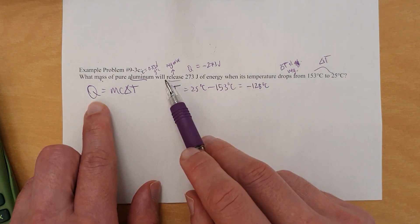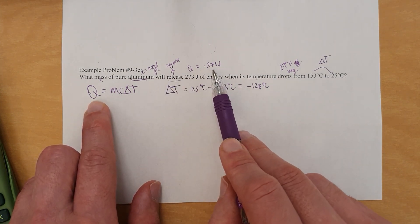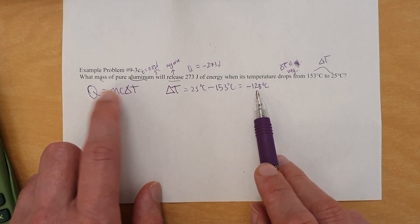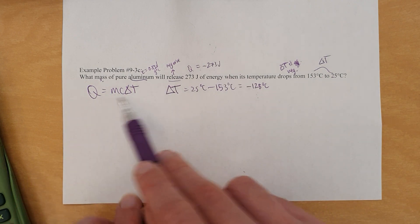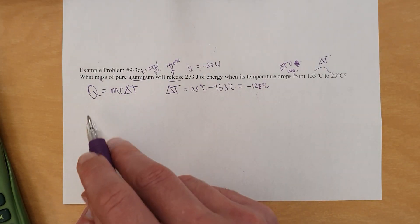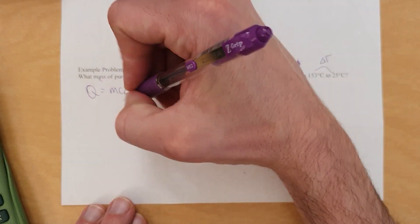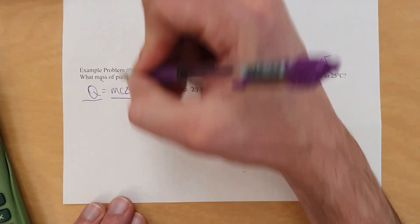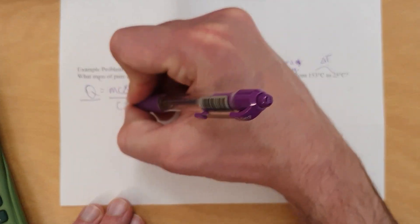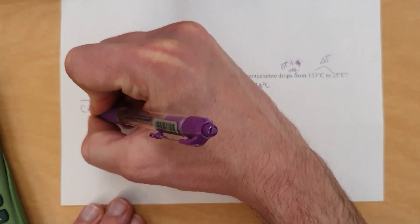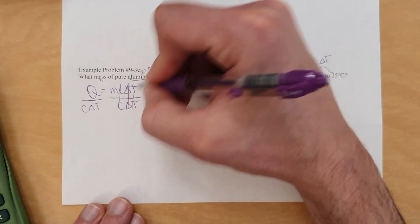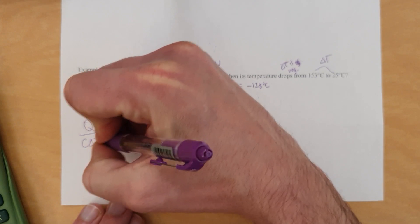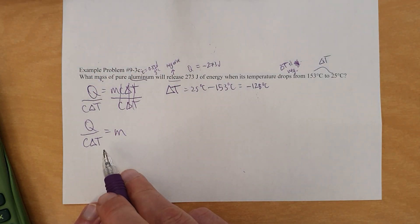Okay, we've got, we need, we have Q, negative 273 joules. Mass is what we're looking for. Specific heat capacity is right there. Delta T is right here. But we do need to get mass by itself. This will not give us the answer to mass. This will give us Q, which we already have. So we need to find mass. And the way we do that is we divide both sides by all the stuff that isn't mass because we need that variable m by itself. So I've got to do it to both sides. I'm going to divide by C delta T on both sides. So that C cancels C and delta T cancels delta T, leaving Q over C delta T equals mass.